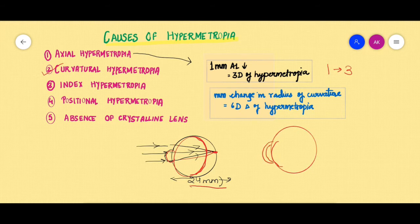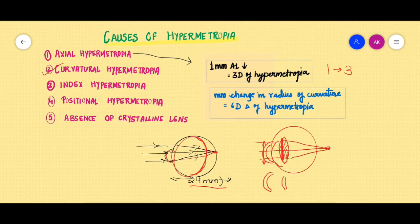So what I mean to say is, for any reason if this cornea becomes a little bit more flatter instead of being convex, or if we have a lens inside and that lens becomes more flatter, then the rays of light will be focused behind the retina and will give rise to a hypermetropic error.